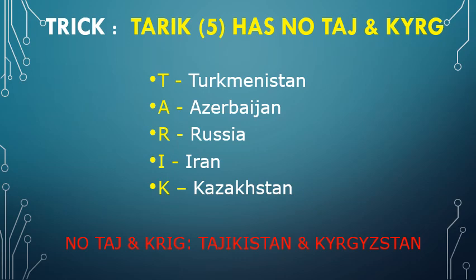Now let us look at why we added the sentence 'Tariq has no Taj and Creek.' These are the 2 countries starting with T and K that have similar or confusing names — Tajikistan and Kyrgyzstan. So remember: no Taj and Creek in TARIQ means Tajikistan and Kyrgyzstan are not touching the Caspian Sea in any way.